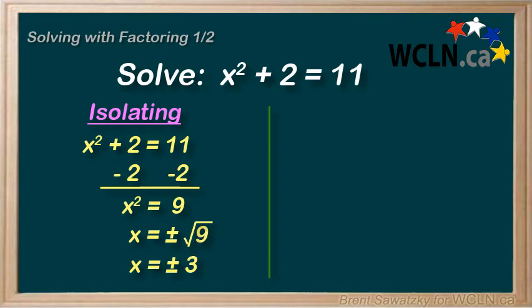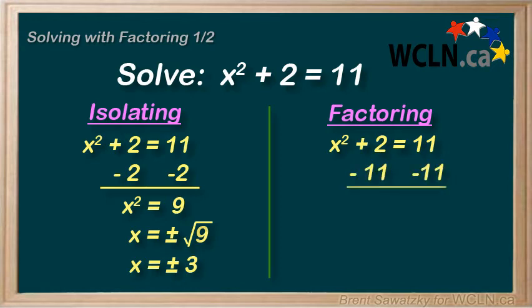So, let's try our second method here. Our factoring method. And we start by getting a 0 on the right. And in this case, we do that by subtracting 11. 2 minus 11 equals negative 9. And so, we get x squared minus 9 equals 0. Perfect. We have our 0 on the right. And our next step is to factor it. We want to turn this into a multiplication. We recognize that it is a difference of squares.